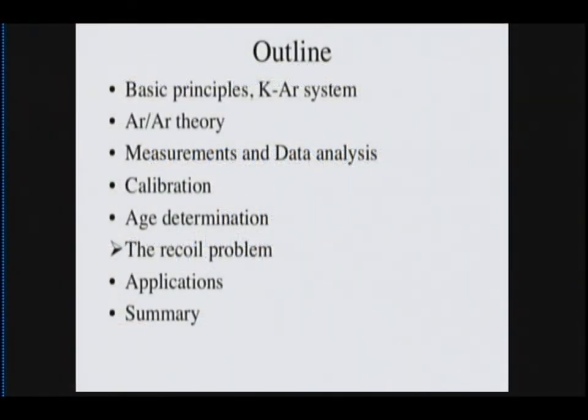We finished discussing the various ways we can combine isotope data to determine ages, and now I want to talk about one of the significant problems we face with argon-argon geochronology. This is important to appreciate, especially if you're trying to decide what kind of material to date if you're working on a project that has several possibilities. This is useful to know in selecting samples. This is what I call the recoil problem.